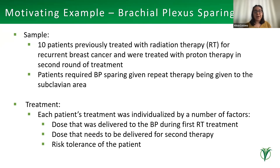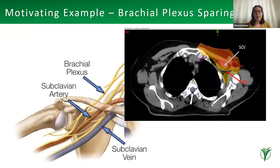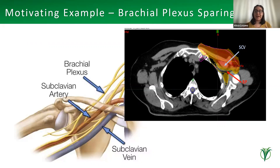Each patient's treatment was individualized by several factors. The dose delivered to the brachial plexus during the first and second treatments depended on disease severity, the regions treated, and the patient's own risk tolerance. For example, some patients said 'do whatever needs to be done,' so the dose to the brachial plexus area might be slightly higher, while another patient who uses her treated arm professionally would want to preserve function. There is quite a bit of variability in this dataset.